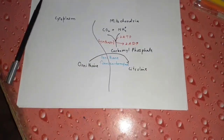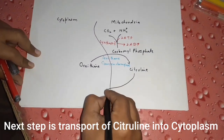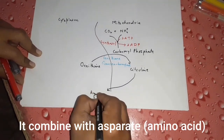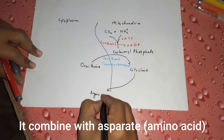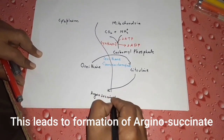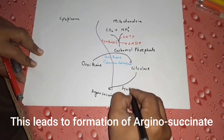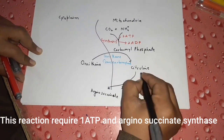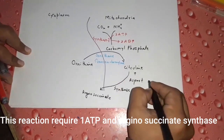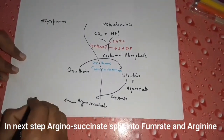This citrulline is transported into the cytoplasm, where it combines with aspartate (an amino acid) and is converted into argininosuccinate, with the help of the enzyme argininosuccinate synthase.